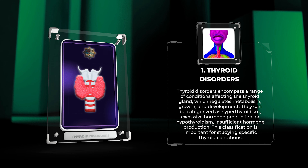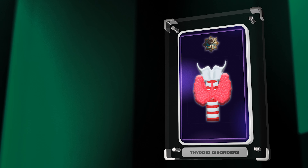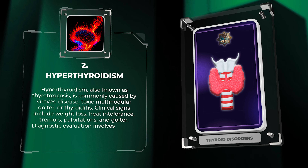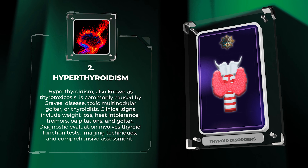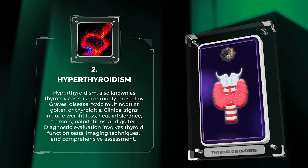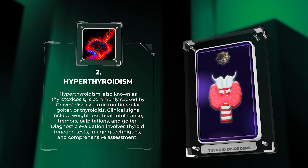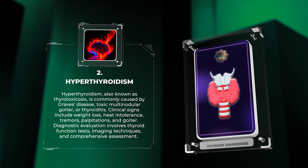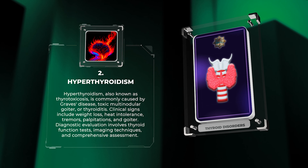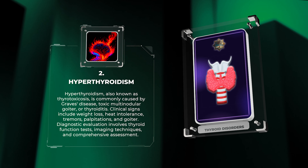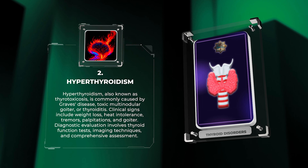Thyroid disorders encompass a range of conditions affecting the thyroid gland, which regulates metabolism, growth, and development. They can be categorized as hyperthyroidism, involving excessive hormone production, or hypothyroidism, involving insufficient hormone production. This classification is important for studying specific thyroid conditions.